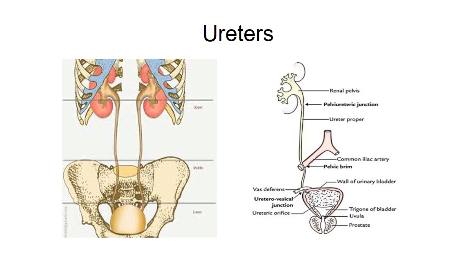From the pelvis there arises the ureter, which drains urine into the urinary bladder. Ureters are thick muscular tubes which drain urine from the kidneys to the bladder. Each ureter has three parts: upper, middle, and lower. There are three areas of constriction which are the sites of calculus formation: at the pelviureteric junction, at the pelvic brim, and at the ureterovesical junction.